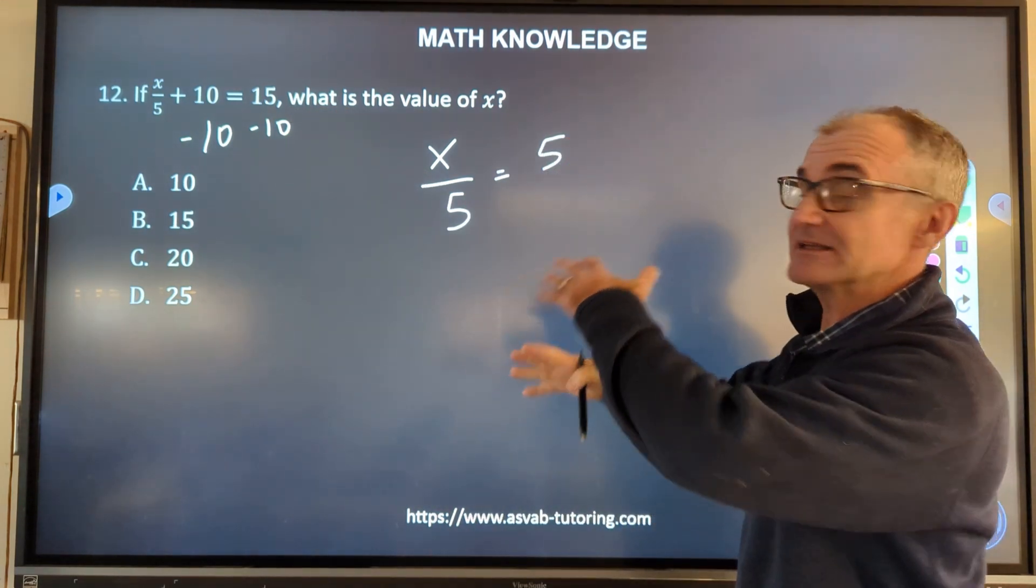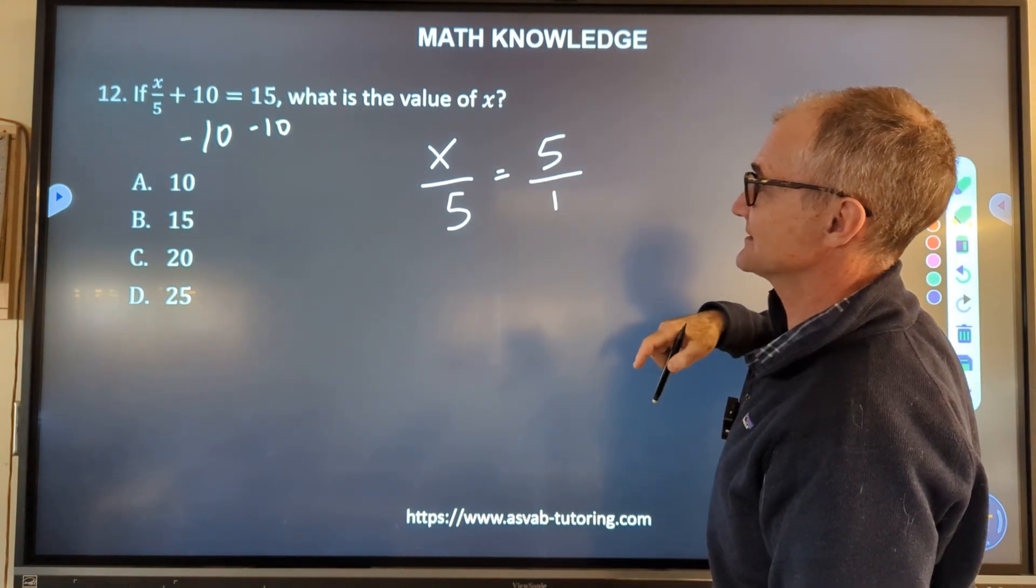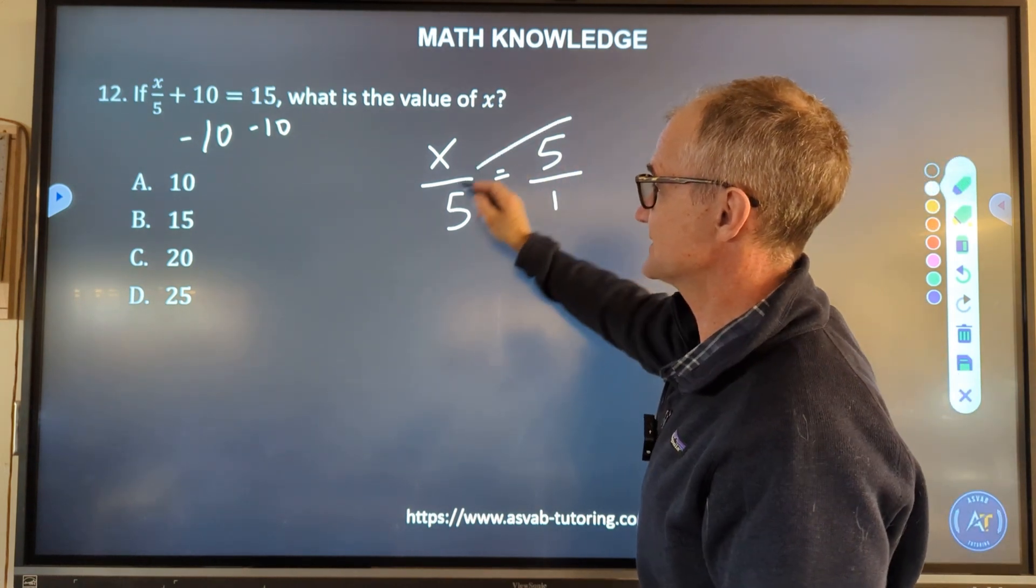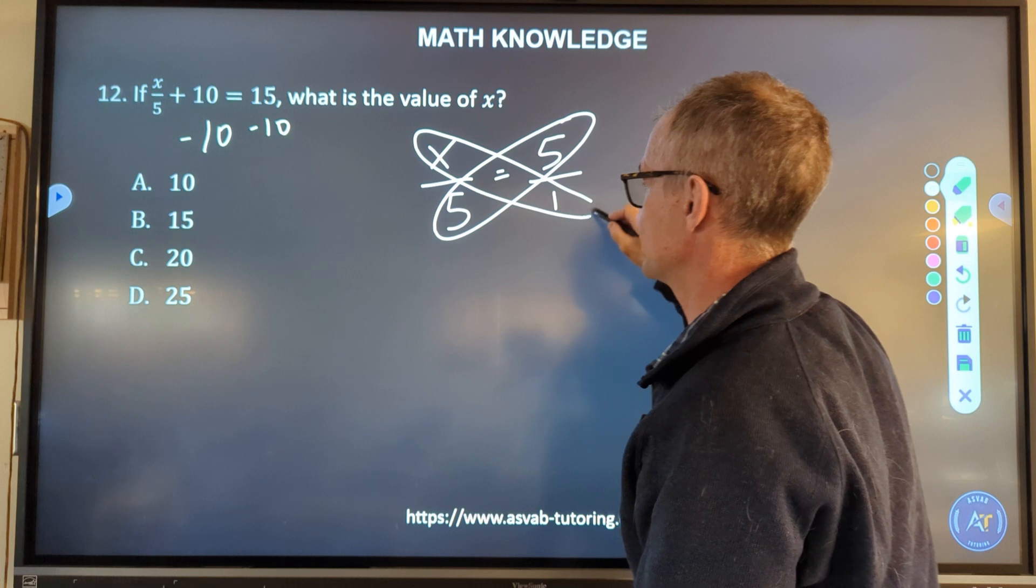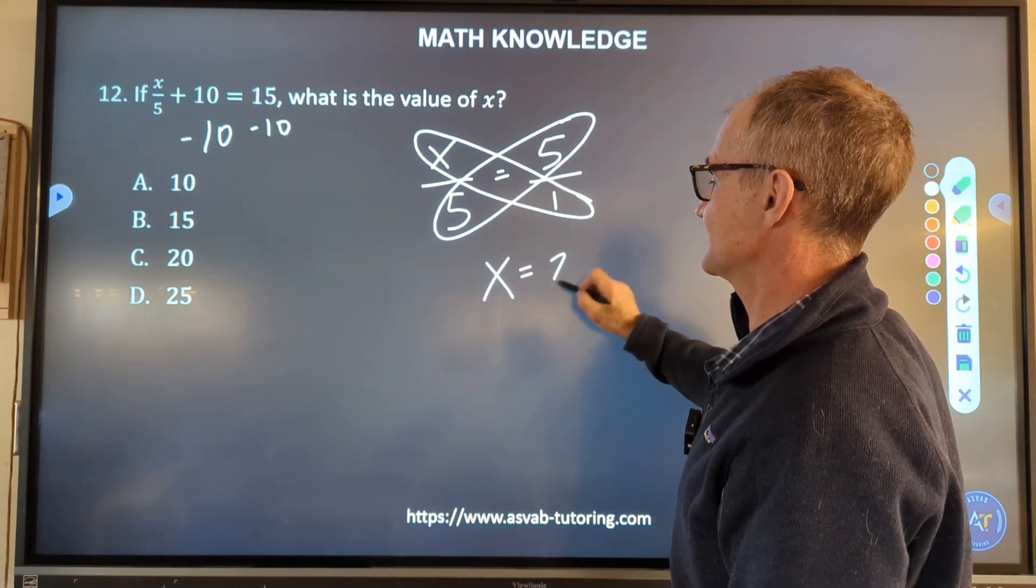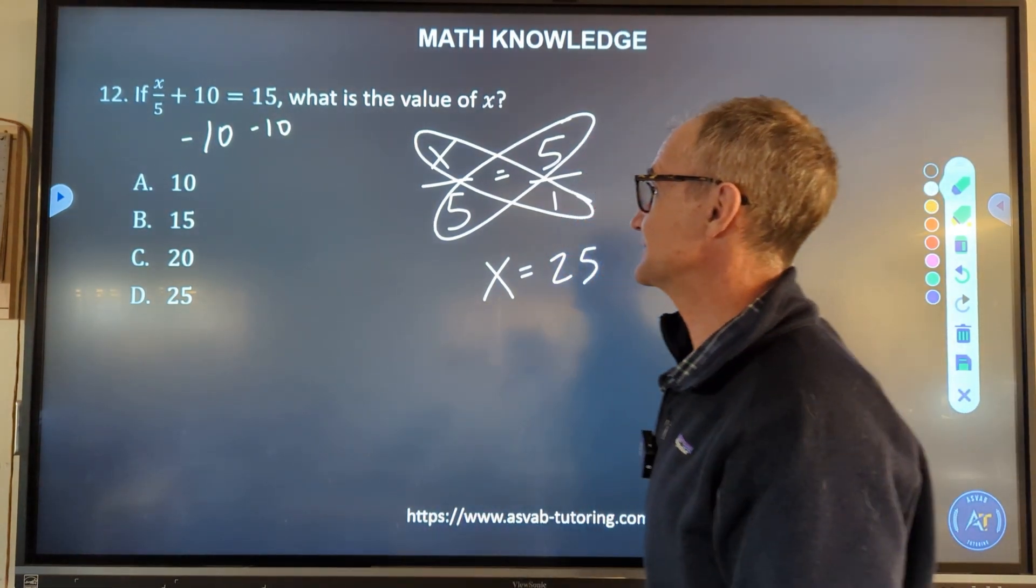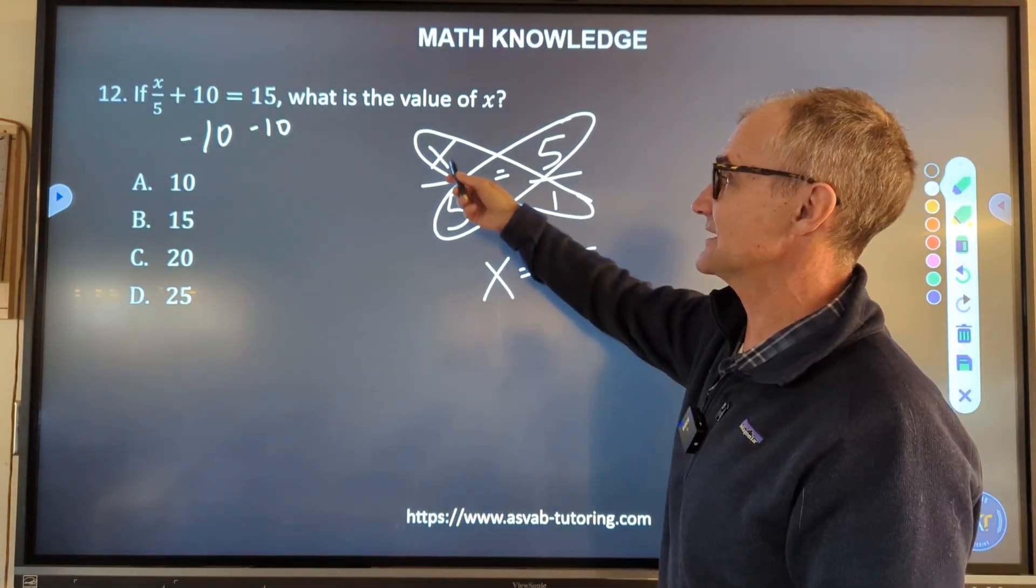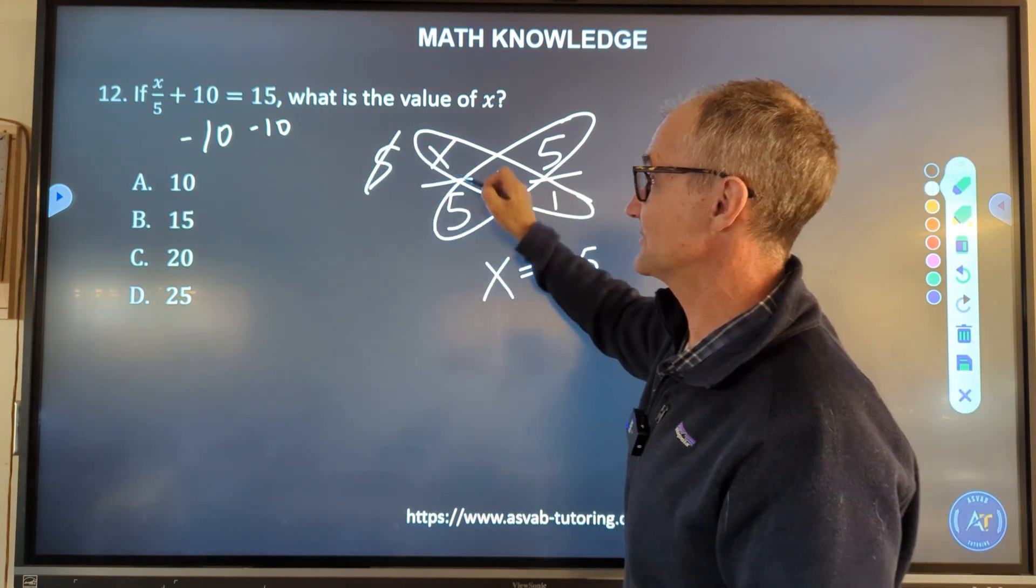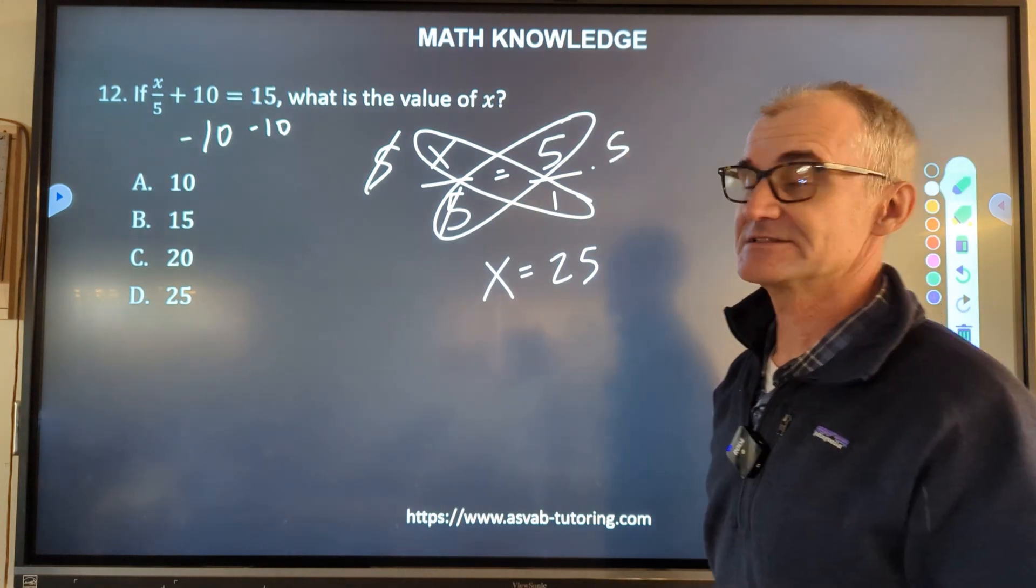That's going to give me x/5. The 10 minus 10 is 0. 15 minus 10 equals 5. I have one fraction equal to another fraction, that's a proportion. Once I have it like this, a good way to solve is I could cross multiply. Say this times this equals this times this. x times 1 is x, 5 times 5 is 25. So that's the correct answer right there, answer D. The other way I could have done it is multiply both sides by 5 and it would give me the same 25.